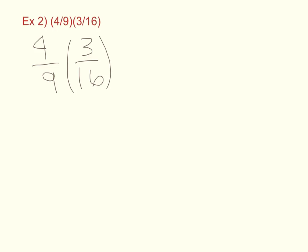Again, multiplying our numerator by our numerator and our denominator by our denominator. So multiplying straight across, we're going to get 4 times 3 over 9 times 16.